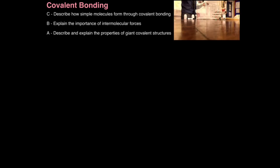In this lesson we're going to look at covalent bonding. The first aim is to describe how simple molecules form through covalent bonding, then explain the importance of intermolecular forces, and then finally describe and explain the properties of giant covalent structures, as well as a bit of exam application.